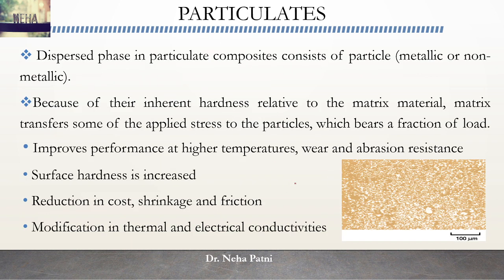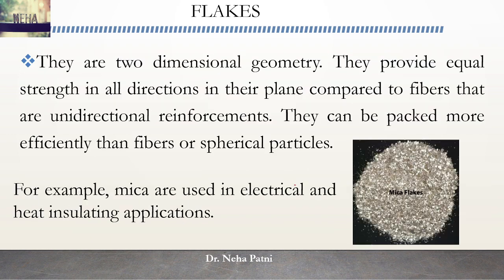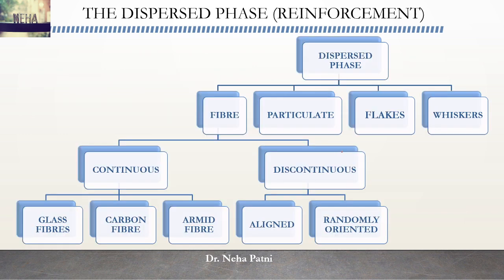Most commercialized products in the market are polymer composites because polymer alone does not suffice the requirement. When you mix things in the form of a particle it becomes a particulate - unlike fiber which is a thread-like long compound. Because of their particle nature, particulates improve performance at higher temperature and increase surface hardness. Flakes have a two-dimensional geometry and can be packed more efficiently than particles and fibers - for example, mica is used in electrical and heat insulating applications. Whiskers are very thin single crystals with high strength, but their commercialization is limited by high cost.